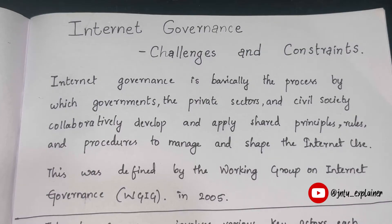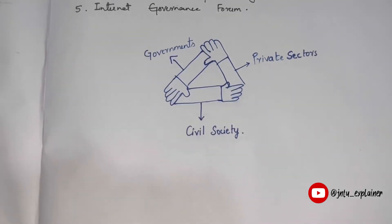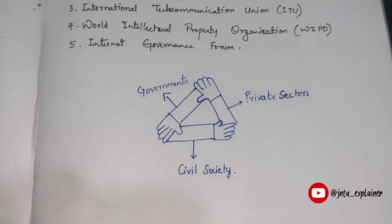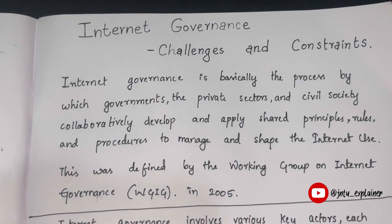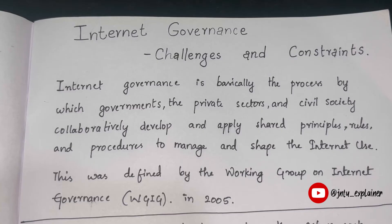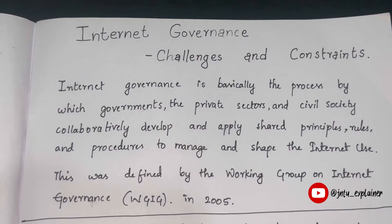The governments, private sector, and civil society — these three sectors collaborate to develop and shape internet use. Each sector has to agree for evolution to take place. This definition was established by the Working Group on Internet Governance in 2005. Now let's understand some of the key actors in this field.